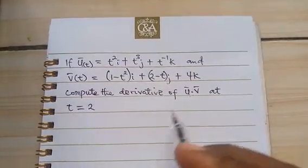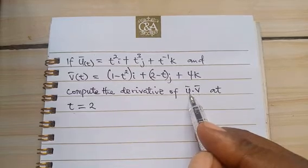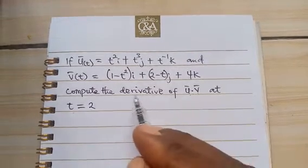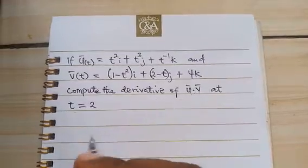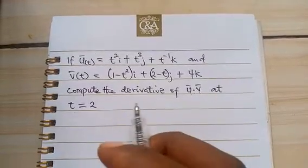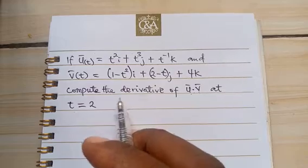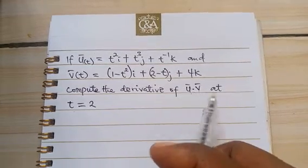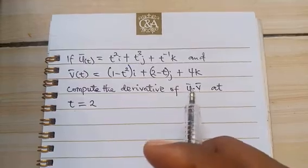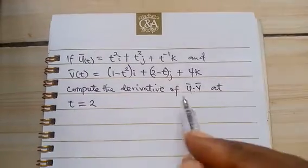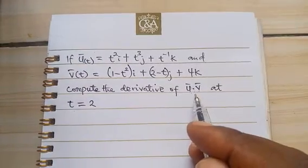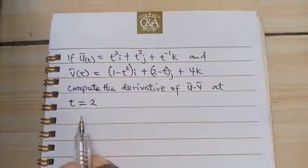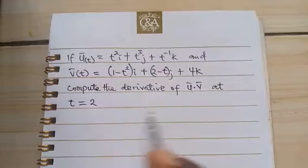Now first of all we need to compute vector u dot vector v. Once we do that we can now get the derivative. Now we have a video on the multiplication of vectors which is the dot product and the cross product. You can look up the video if you don't understand how it's done but we'll have to be a little bit fast.